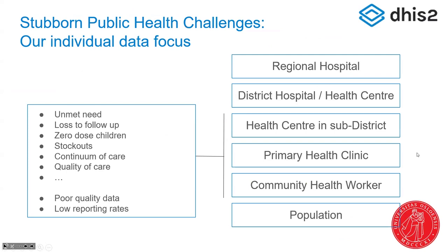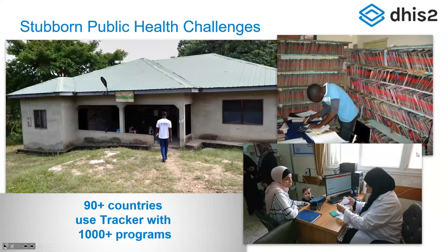There are many stubborn public health challenges — unmet need, loss to follow-up, zero-dose children — and those happen at the point of intervention and care. That's where we want to be capturing data. We have many years of working in these specific kinds of clinics: two or three health workers, a busy records room, maybe someone doing data, coordinating community outreach, end of the supply chain. That's the target point where all systems come together.